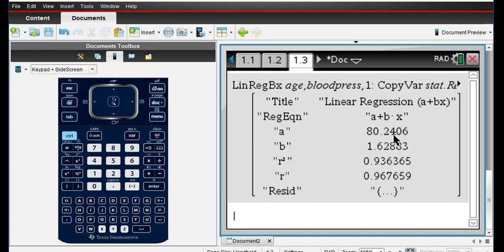So I would click OK and notice at the top it gives you the regression equation A plus BX and it says to plug in for A 80.2406, which is what we got before, the B plus 1.628. So it just tells you where to plug A and B into the regression equation.